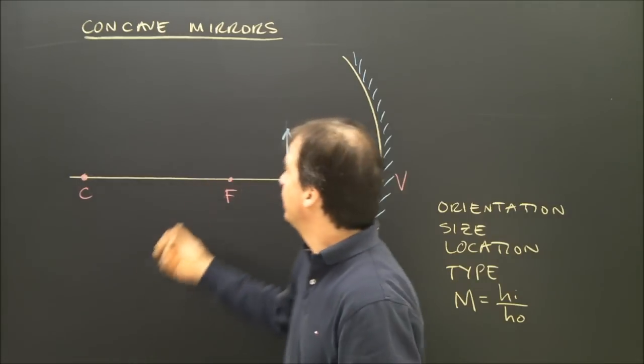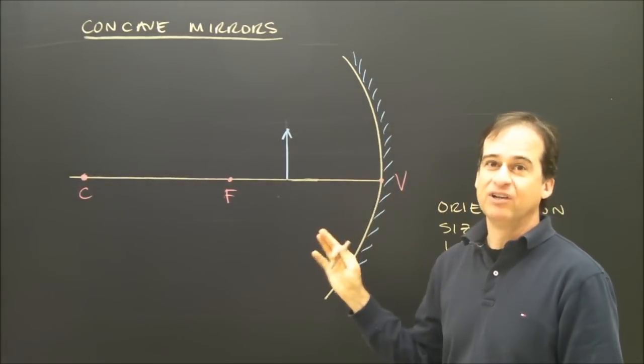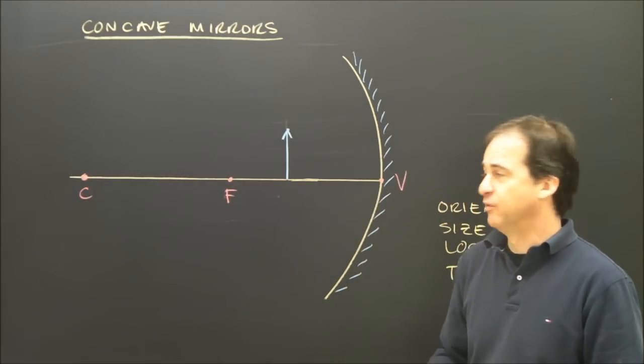Let's look at a different ray diagram for a concave mirror. In the first one, we found a real image because we could draw the three rays and they all met. This is going to give us a different type of image.